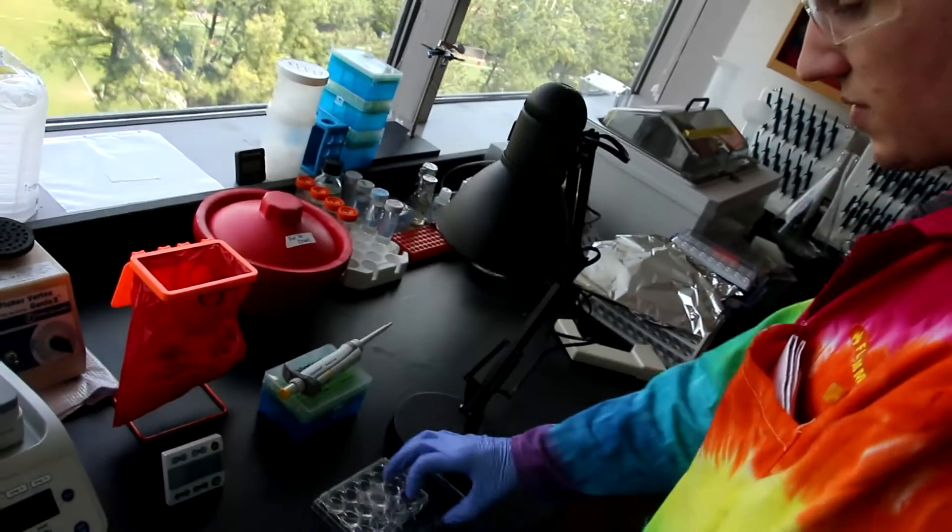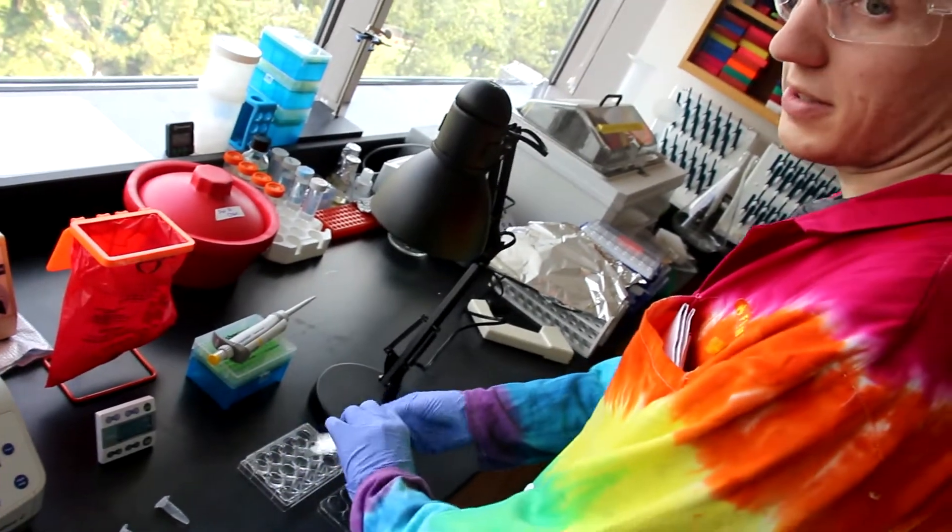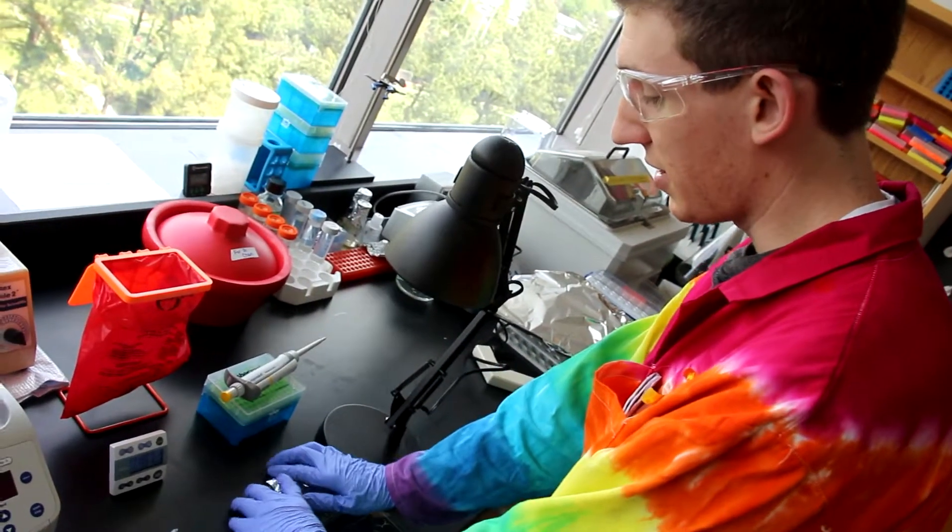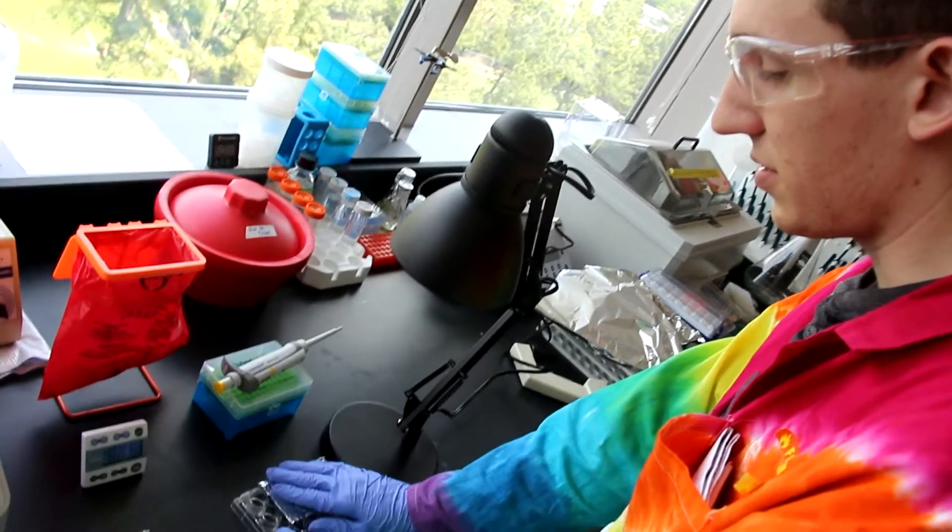First, you'll want to remove the lid of the plate and foil off all wells other than the untransfected control and the positive control.